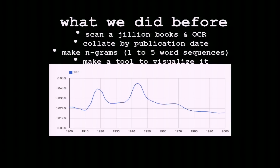Then let's slice and dice those words from the books in what we call ngrams. An ngram is one to five words in our case. For example, the word 'dog' is a one-gram, 'amazing adventure' is a bigram. Then we built a tool — with my colleague Will Brockman — that lets you visualize how these words are used over time.